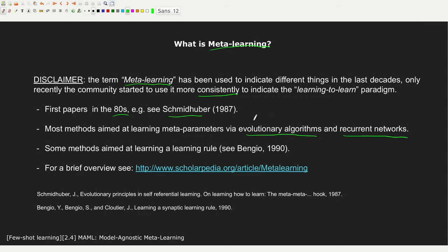There were also other researchers investigating the problem in that period. There is an interesting article by Bengio where there is a way to learn a learning rule rather than a set of meta-parameters. On Scholarpedia you can find a nice overview of these different approaches.